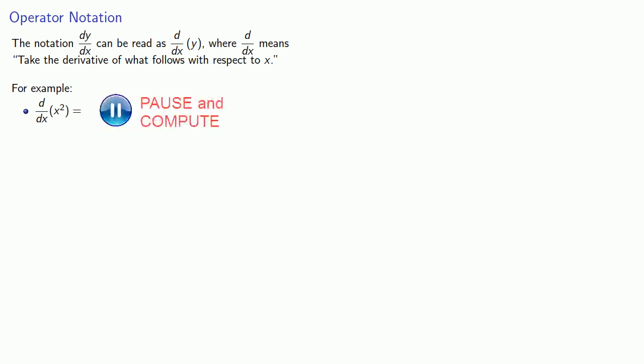In order to do this most efficiently, it helps to introduce something called operator notation, and this goes back to one of the ways we have of indicating the derivative. dy dx should not be read as a fraction, but it's convenient to read it as d over dx applied to y, where d over dx means take the derivative of what follows with respect to x. For example, d over dx of x squared is take the derivative of x squared with respect to x, and you get 2x.